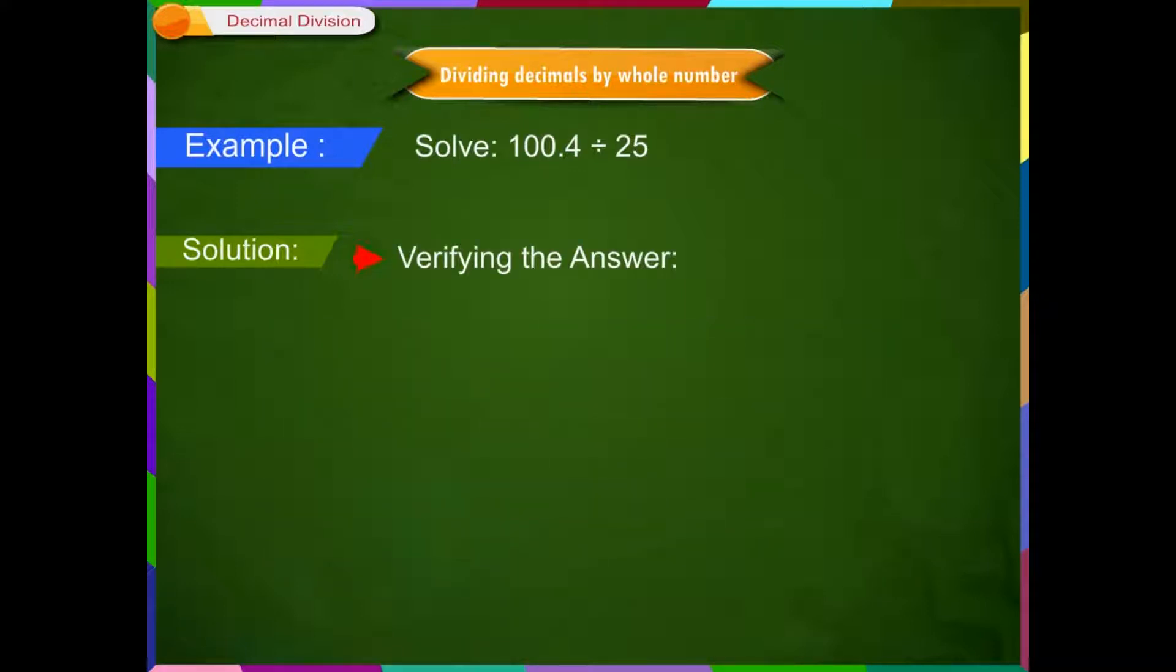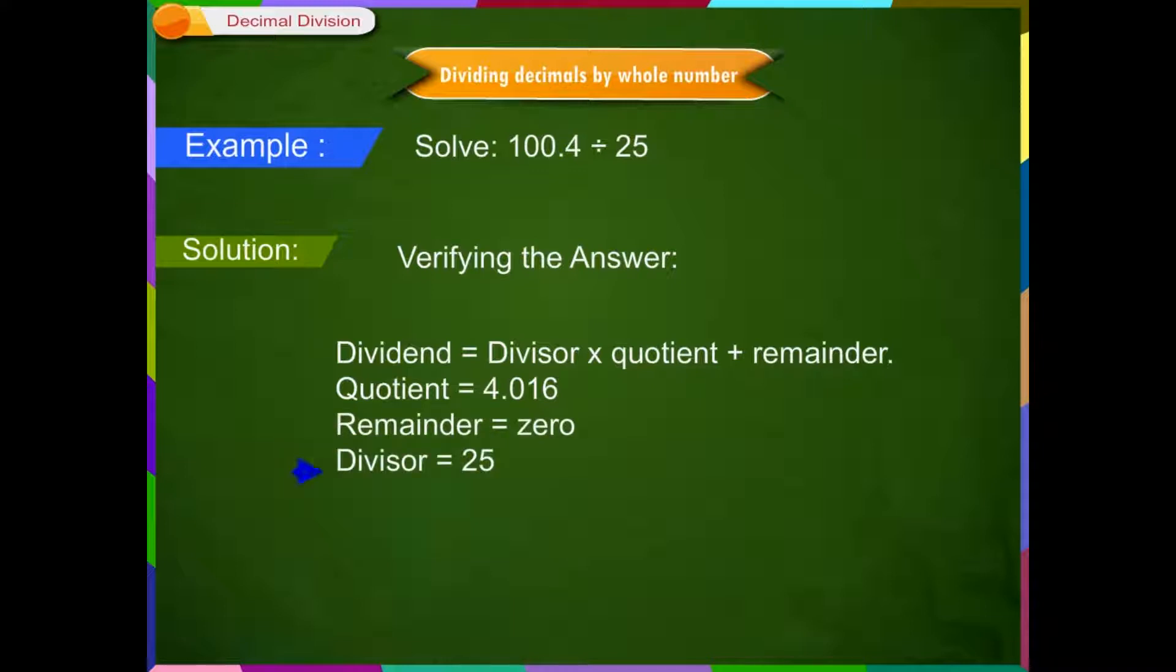Verifying the answer. In division, we already know to verify the answer. It is the same when it comes to decimals too. To check, we use this rule: Dividend is equal to divisor into quotient plus remainder. In our problem, quotient is equal to 4.016, remainder is equal to 0, divisor is equal to 25, and dividend is equal to 100.4.